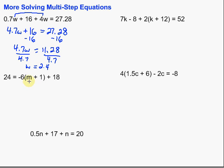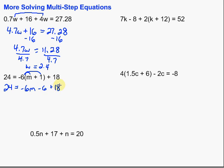The next one has some parentheses. To get rid of the parentheses, we need to use our distributive property. Let's go ahead and distribute that negative 6 through: negative 6 times m gives negative 6m, and negative 6 times 1 gives minus 6. So we have negative 6m minus 6 plus 18.